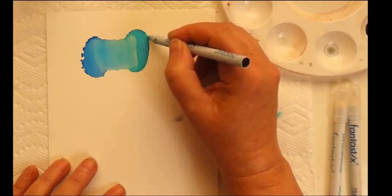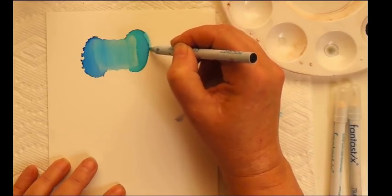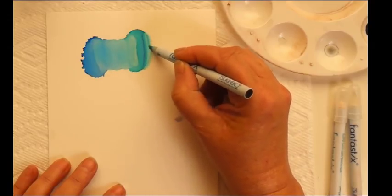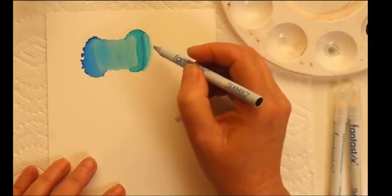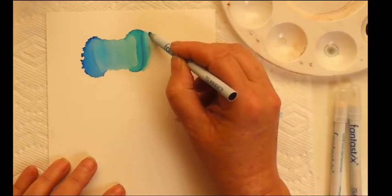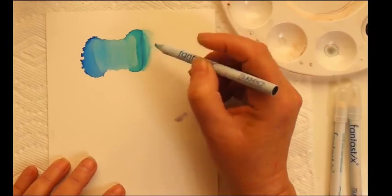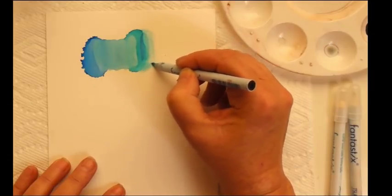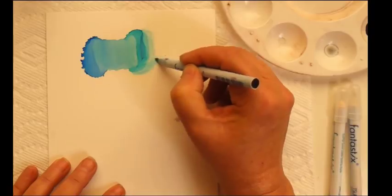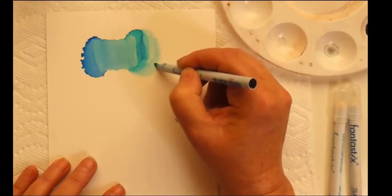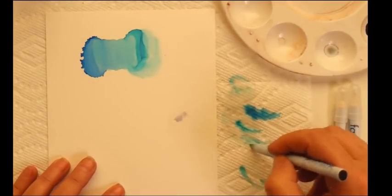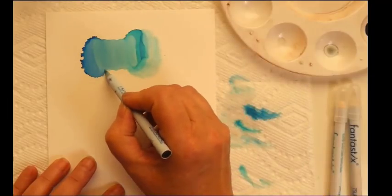Let's say that we want to soften this line. You can do that. Now this is on Yupo and Yupo does have some staining, so there is going to be a bit of stain there, but you can pull the color out and make a very nice soft shape with it.